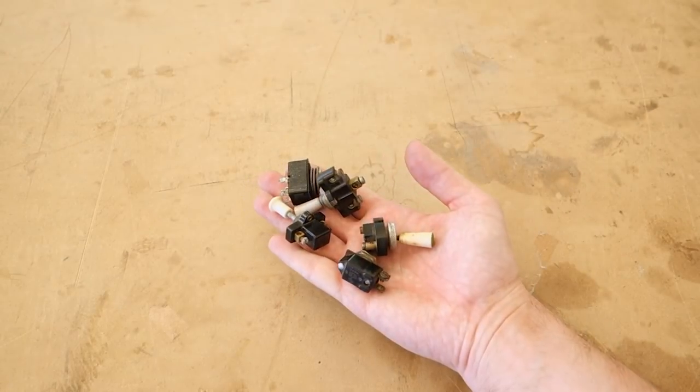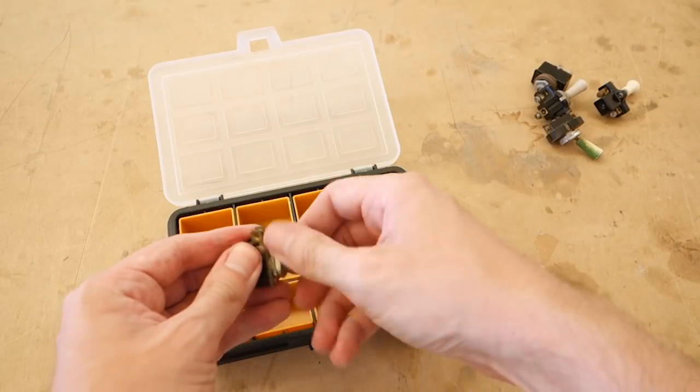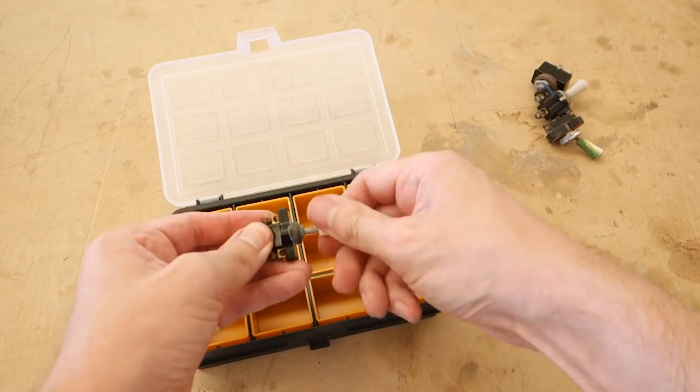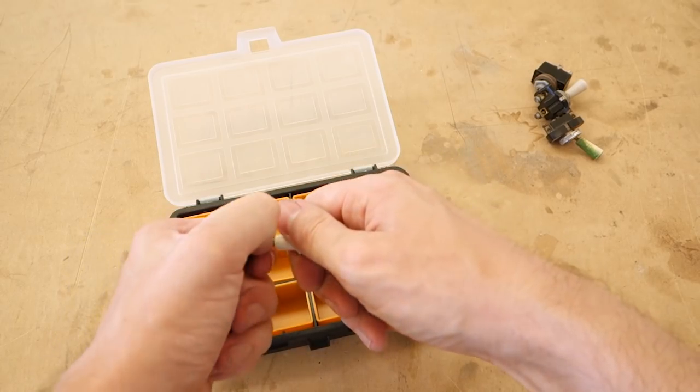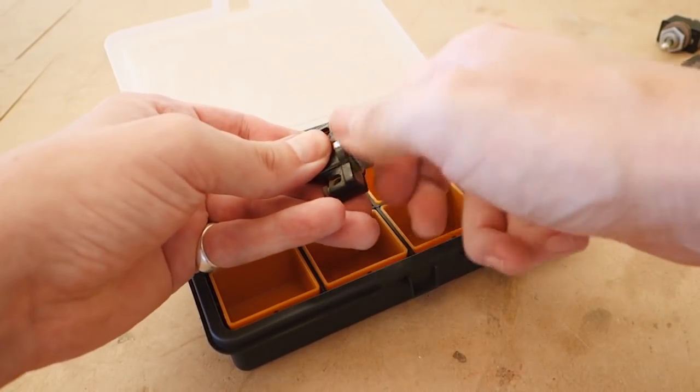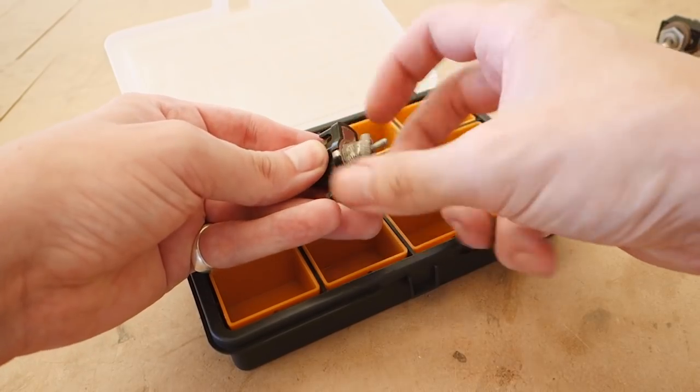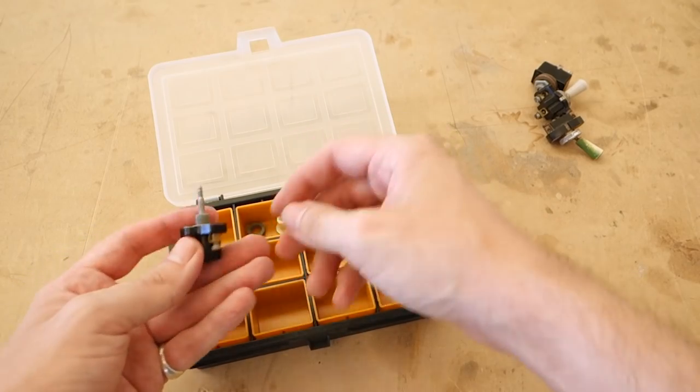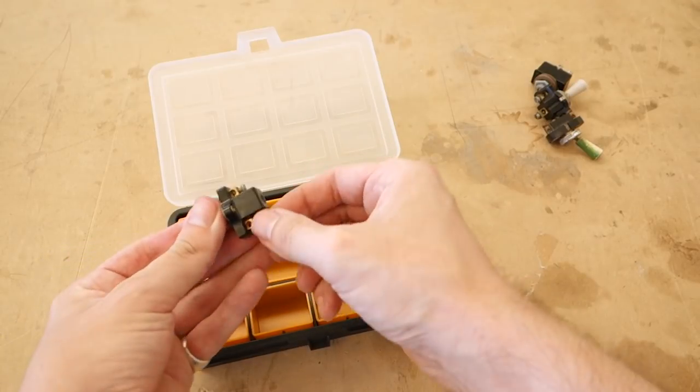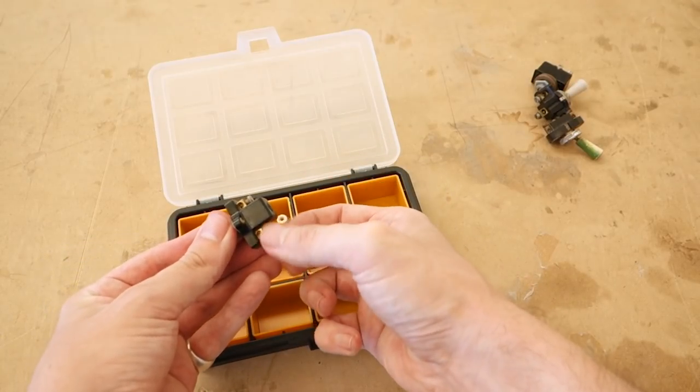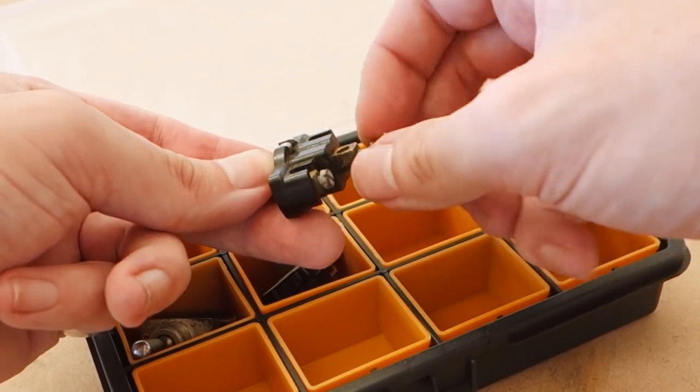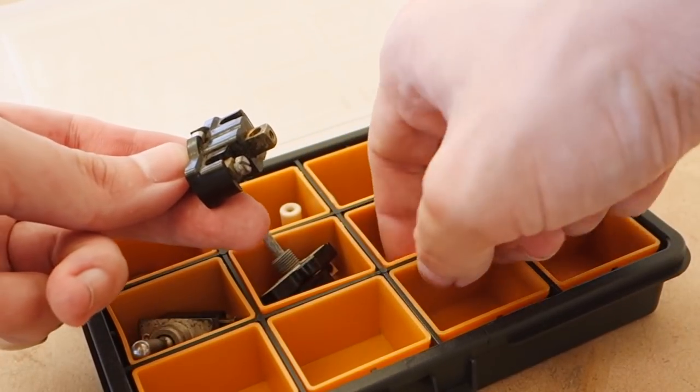Once that's established, we're going to need to disassemble these switches into all their constituent parts. When you're working with many similar, yet dissimilar items at once, it's important to keep good order so you don't mix parts between different switches. I really like these organizer boxes with removable individual compartments. Focus on getting as much apart as you can at first, even all the little screws and nuts, as it will make the following steps easier.